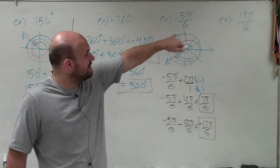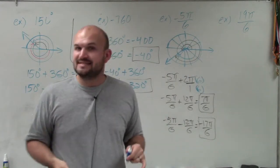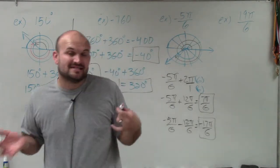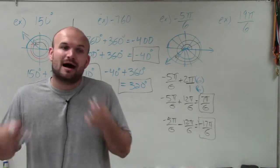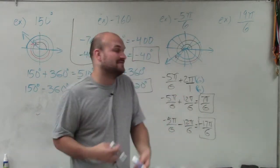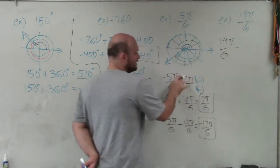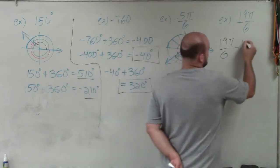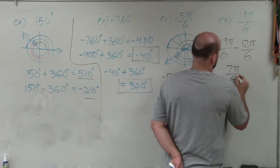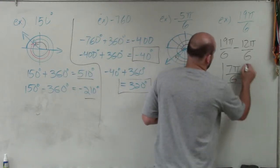In this case, the initial angle is 19 pi over 6, which is over 2 pi. So if I subtract 2 pi — which is 12 pi over 6 — I get 19 pi over 6 minus 12 pi over 6, which gives me 7 pi over 6. Since 7 pi over 6 is a positive angle between 0 and 2 pi, that is my positive angle.